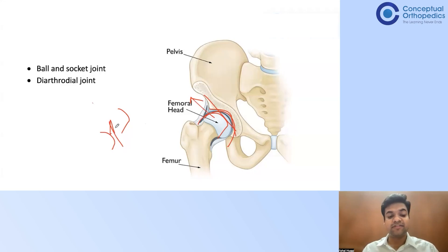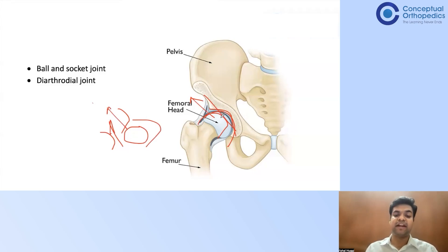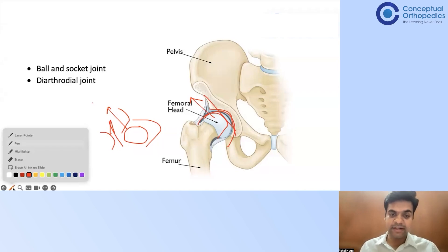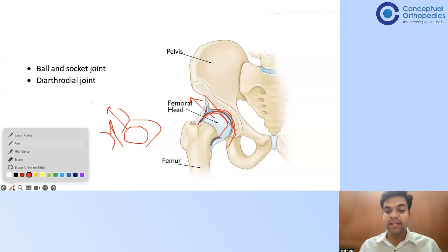In conditions like Perthes disease, the acetabulum may be round but the head is not in proper shape, so the head comes out. If the head is not going to be in the socket, abnormal forces start acting, leading to abnormal loading on the femoral head. Abnormal loading leads to abnormal pressure on the cartilage, which will lead to arthritis or degeneration. So the primary importance of any diarthrodial joint is that the two surfaces must be exactly a mirror image of each other.